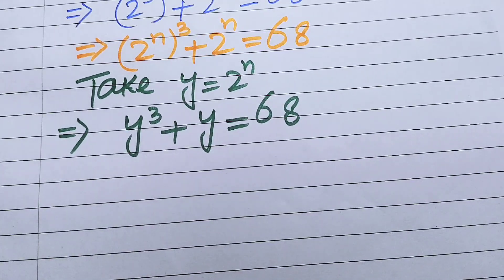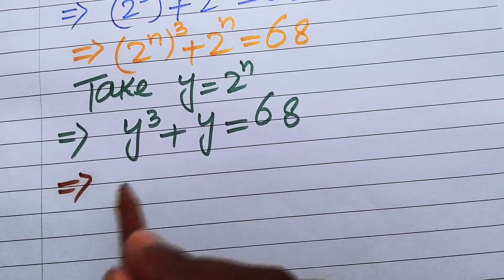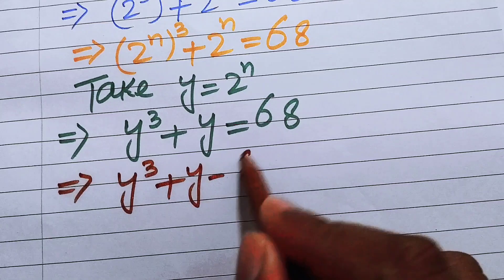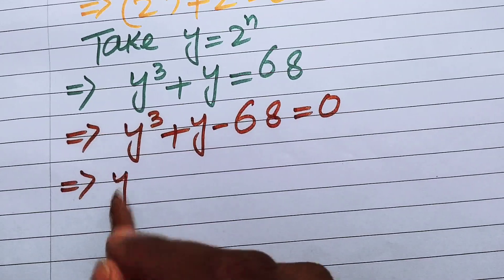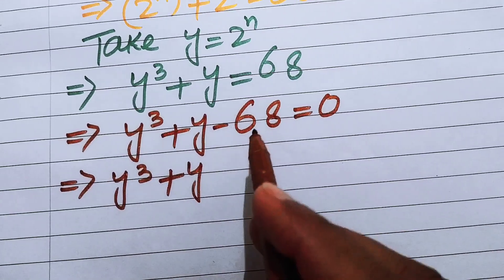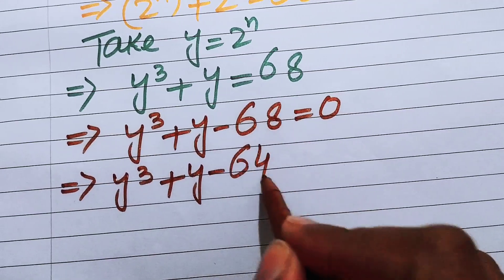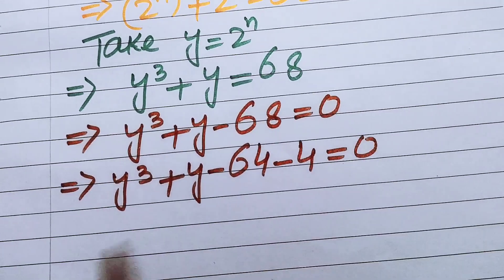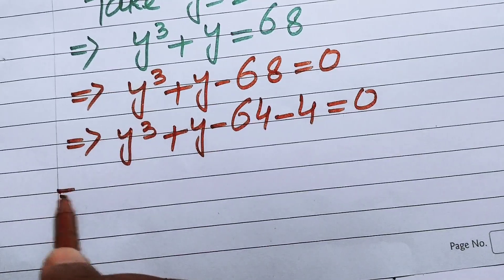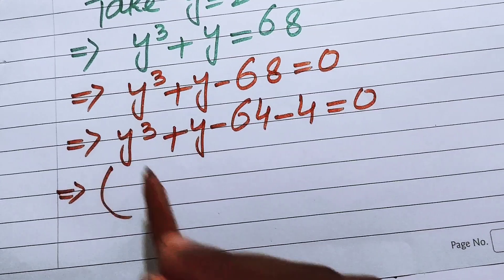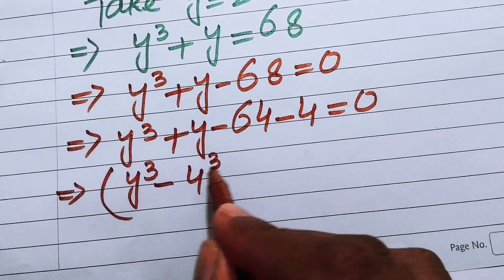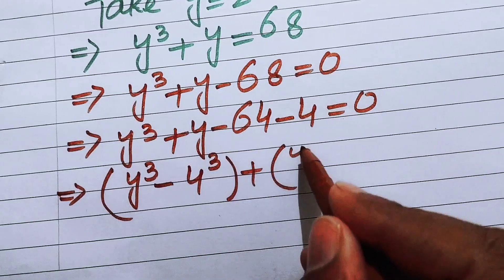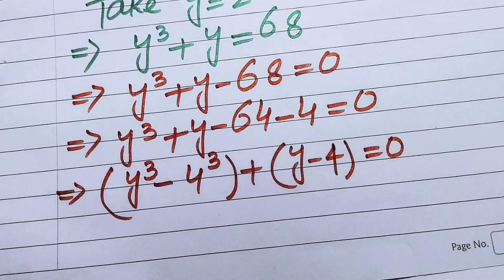To solve using the cubic formula, we move 68 to the left-hand side: y cubed plus y minus 68 equals 0. We rewrite minus 68 as minus 64 minus 4, giving y cubed plus y minus 64 minus 4 equals 0. We identify the cubic terms: y cubed and 64, where 64 equals 4 cubed, plus y minus 4 equals 0.